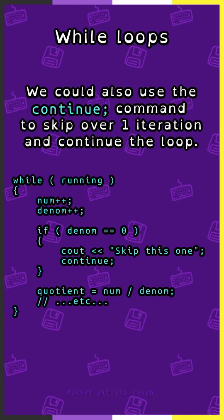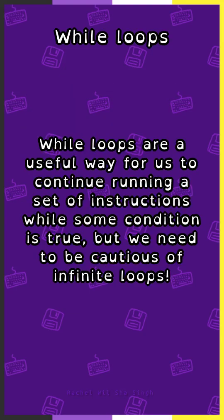We could also use the continue command to skip over one iteration and continue the loop. Let's say we're in a loop where one is added to the denominator each time. We can say if the denominator is equal to zero, we'll skip it and use continue to do so. While loops are a useful way to continue running a set of instructions while some condition is true, but we need to be cautious of infinite loops.